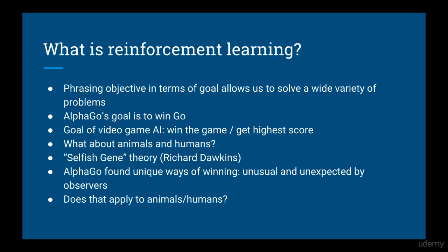The goal of AlphaGo is to win Go. The goal of a video game AI is either to get as far as possible in the game or achieve a high score. What's interesting is when you consider animals and specifically humans. Evolutionary psychologists have said that our genes are selfish, and all they want to do is make more of themselves. This is really interesting because just like AlphaGo, we've found many roundabout and unlikely ways to achieve this.